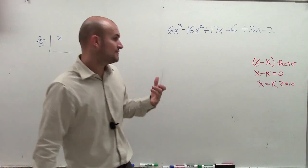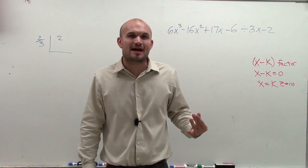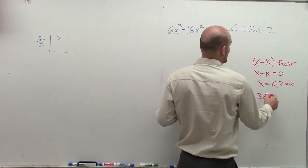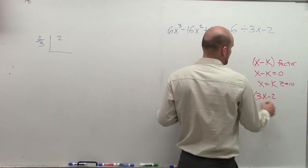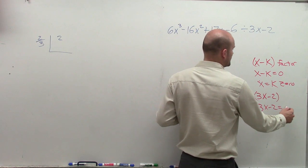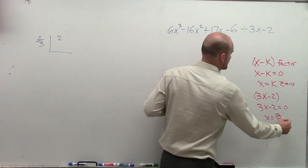Now, here's where it comes into a difficulty. If I have 3x minus 2, and if I'm saying that's my factor, then what's my zero? So what you do there is you say 3x minus 2, if that's my factor, what's going to be my zero? And you end up getting x equals 2 thirds.